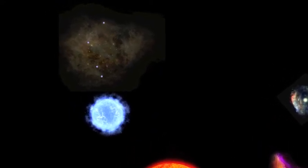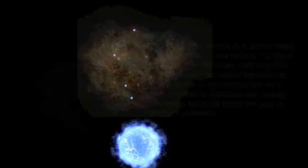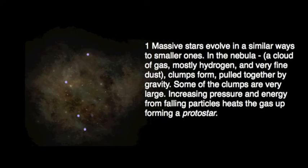Massive stars evolve in the same way as smaller stars, only accumulating a very large amount of mass. Because the star is so big, the internal pressure and temperatures are so high that the star burns very brightly. The hydrogen fuel fuses very much more quickly.